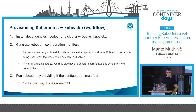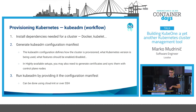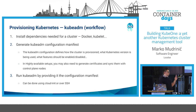For highly available setups it gets more complicated because you also have to take care of certificates and sync them and configuration files between all control plane nodes. When you have the kubeadm configuration manifest, it is straightforward - you run `kubeadm init` and `kubeadm join` for other control plane nodes. This can be done using cloud-init, and there are even templates for cloud-init with kubeadm available online, or you can just run it over SSH.